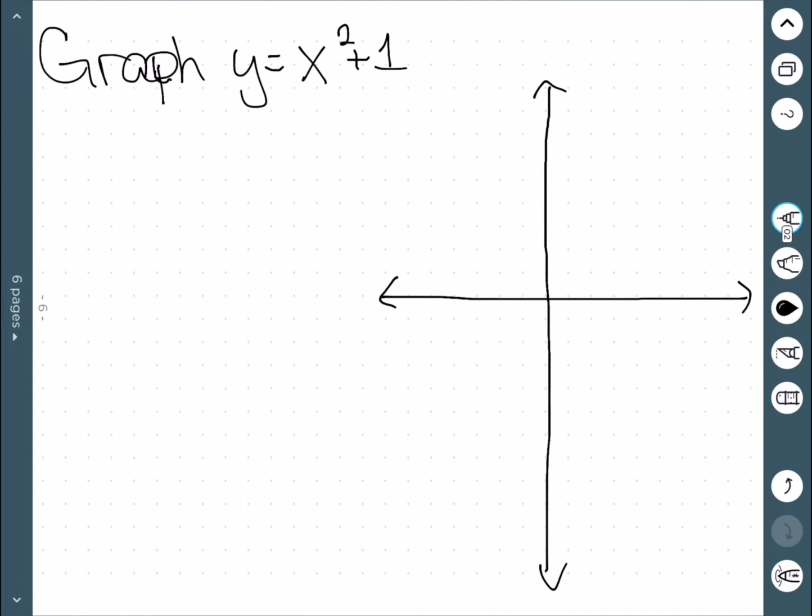Our next example, we want to graph y equal to x squared plus 1. Once again, we'll pick some numbers for x, and this time we'll get a little bit better of the pattern: negative 2, negative 1, 0, 1, 2.